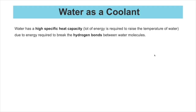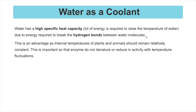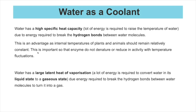Water acts as a coolant due to two properties. First, water has a high specific heat capacity — it takes a lot of energy to increase its temperature because energy is needed to break hydrogen bonds between water molecules. This means internal temperatures of plants and animals remain relatively constant even when air temperature fluctuates, preventing enzymes from denaturing or becoming inactive — water buffers temperature changes.